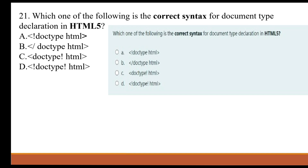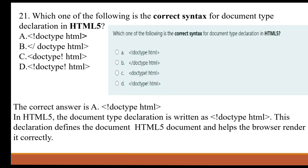The correct answer is A. In HTML5, the document type is written as a bracket — the DOCTYPE declaration. This declaration defines the document as an HTML document and helps the browser render it correctly.